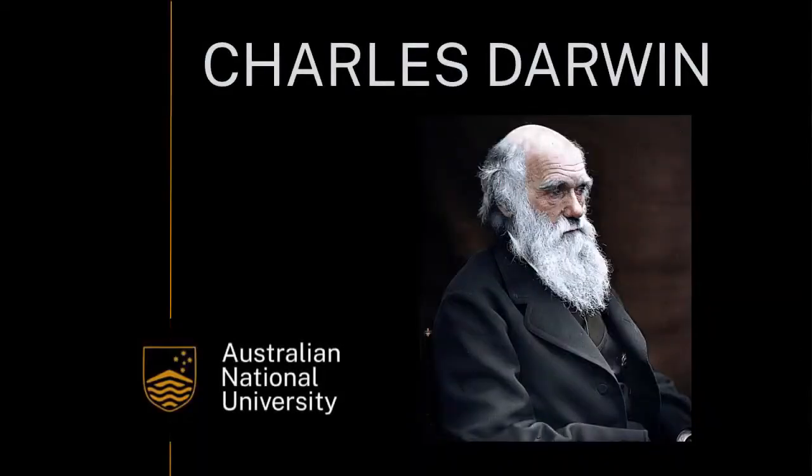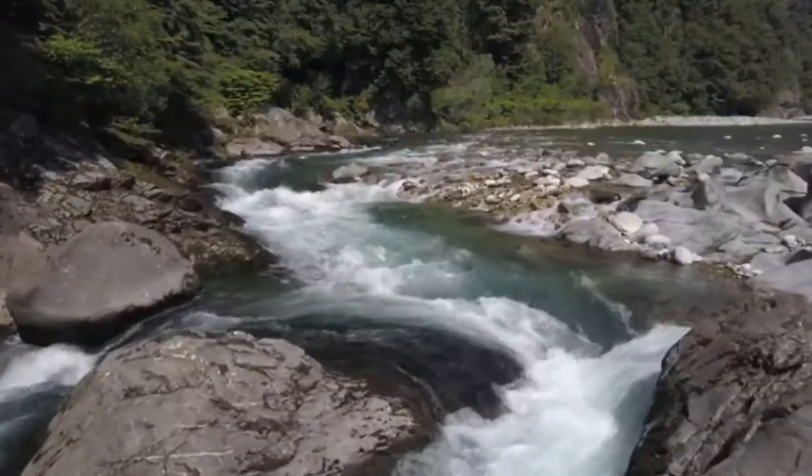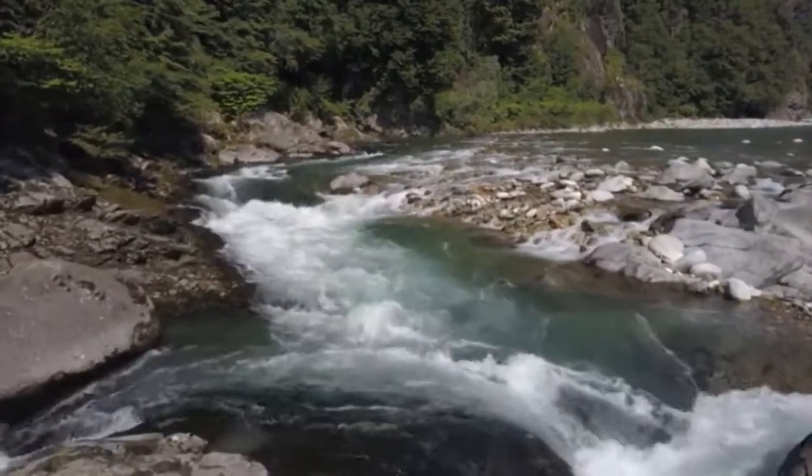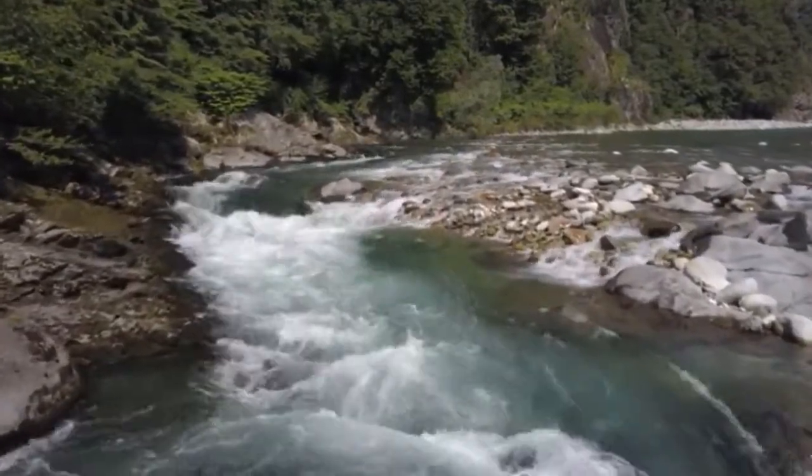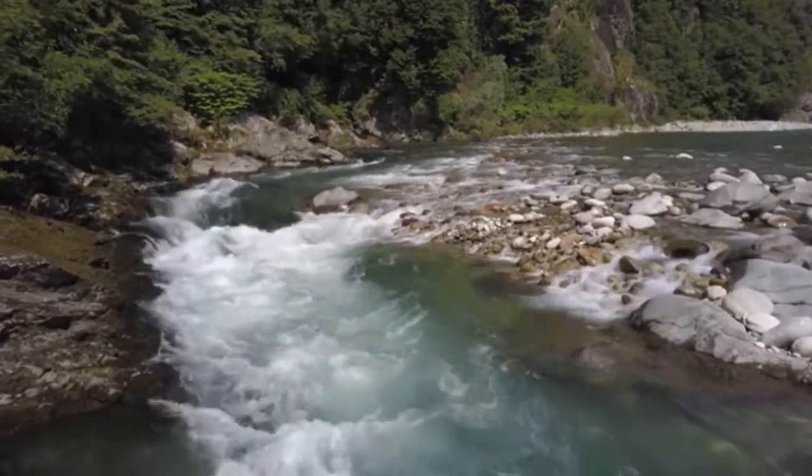One of Charles Darwin's mentors coined the term uniformitarianism — in other words, the processes that happen today were happening in the past. The processes we're talking about here with these students are basically fluid flow and movement of particles in that fluid. We know that when there was lots of fluid, in other words, a big river moving really fast, you can move big rocks.